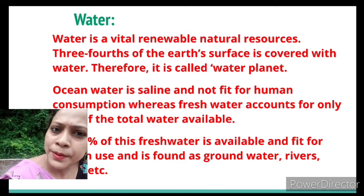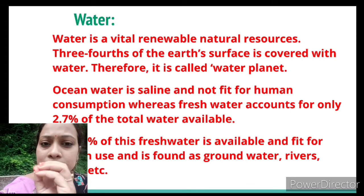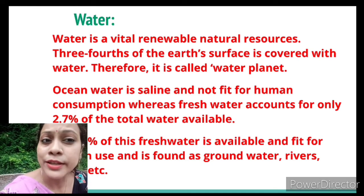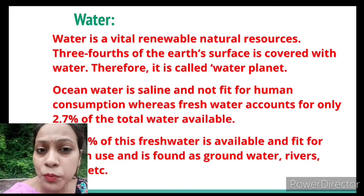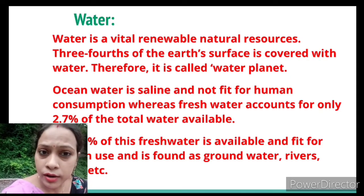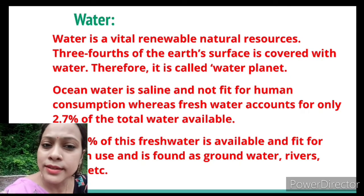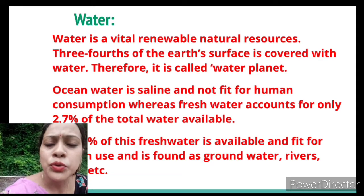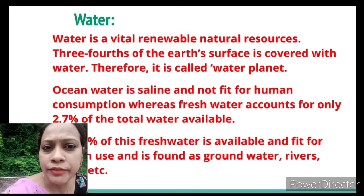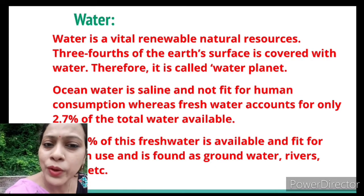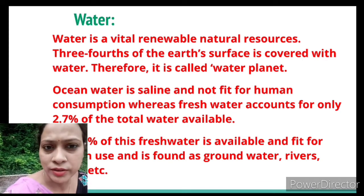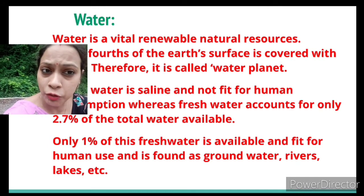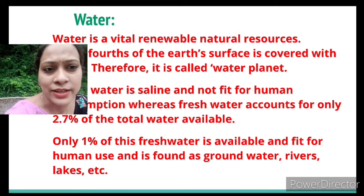Ocean water is saline — it contains salt — so it is not fit for human consumption; we cannot drink it or use it for agriculture. Fresh water accounts for only about 2.7% of total water available. Even though three-fourths of the earth is water, only 2.7% is fresh water, and of that, only 1% is available and fit for human use, found as groundwater, rivers, and lakes.